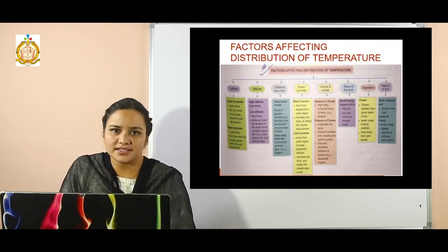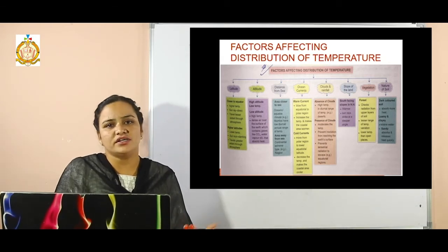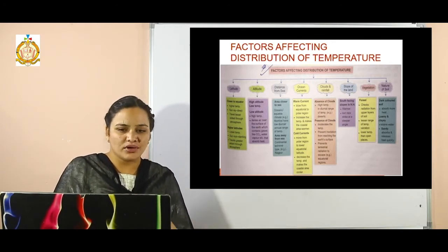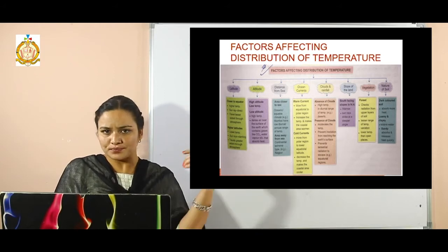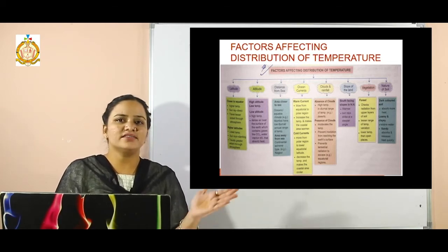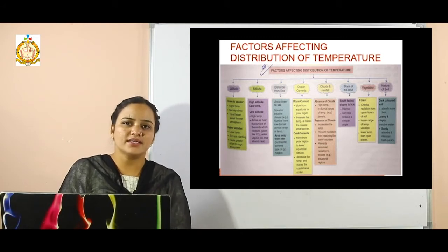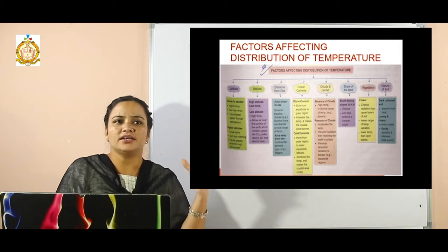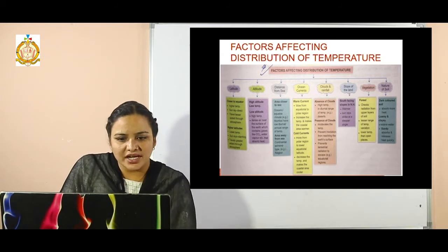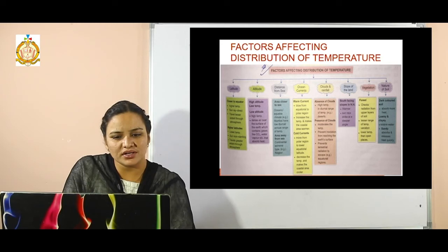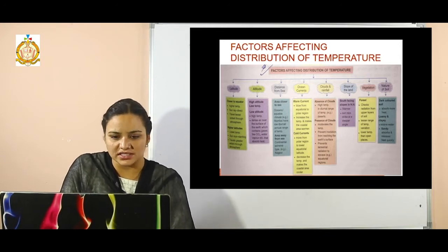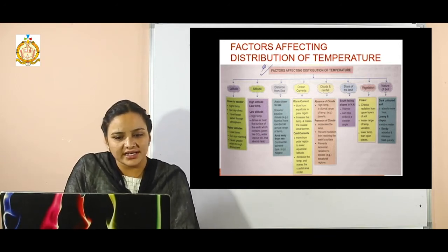The next factor is distance from sea. Areas which are closer to the sea have moderate temperature due to the influence of the sea or water bodies. Areas which are away from the sea or coastal areas experience fluctuating temperature — high in summer and low in winter. For example, Mumbai has a low annual range of temperature as it is located on the coast, known as an oceanic or equable climate. Areas away from the sea, like Nagpur, have an extreme continental type of climate.